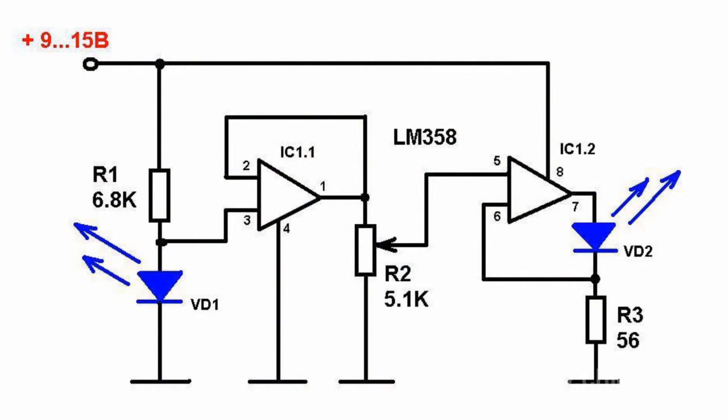When current flows through VD2, there is voltage drop across resistor R3. This means that voltage is applied to the inverted input of IC1.2 chip.